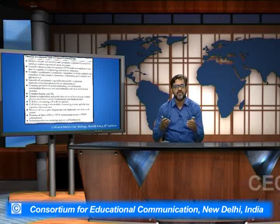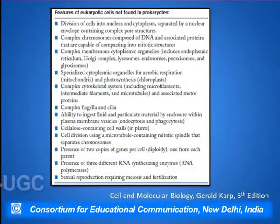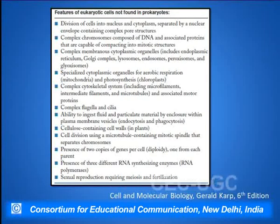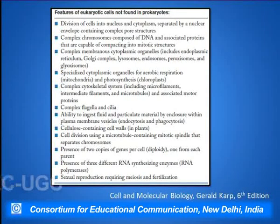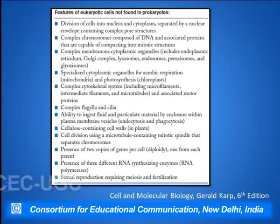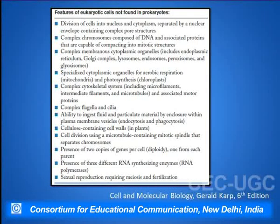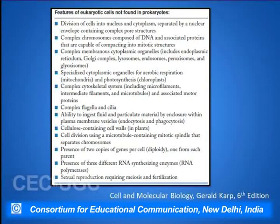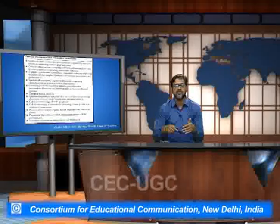There are many features which are different in the prokaryotes and eukaryotes, such as the absence of the nucleus in prokaryotes but its presence in eukaryotes. Flagella and cilia are present basically in the prokaryotic system but not in the eukaryotic systems. There are various specialized organelles present in eukaryotes which are not present in the prokaryotic system.